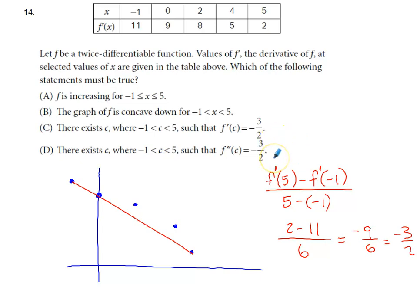But think about d. The rate of change of f prime would be f double prime. The average rate of change of f prime on this interval is negative 3 halves. Because f is twice differentiable, f prime is both continuous and differentiable. The mean value theorem is going to guarantee that the instantaneous rate of change of f prime, which is f double prime, has to equal this average rate of change at least once on that interval.